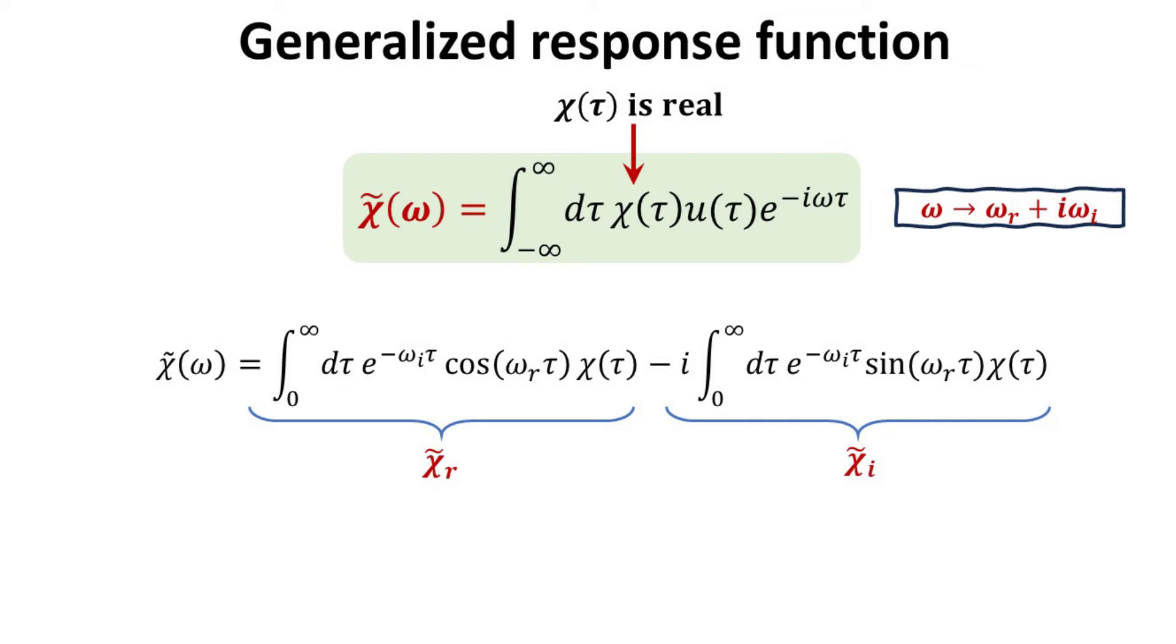Since chi t is real, it allows us to partition the generalized response function into real and imaginary parts, herein denoted by chi tilde r and chi tilde i. Due to their cosine and sine dependence, it is therefore apparent that the real part of the generalized response function is even with respect to omega r, while the imaginary part is an odd function instead.